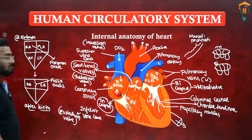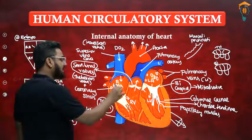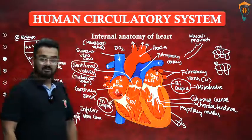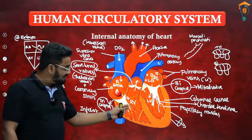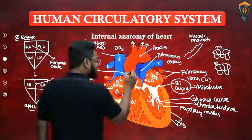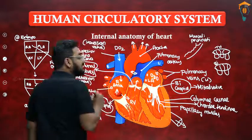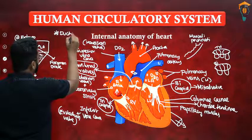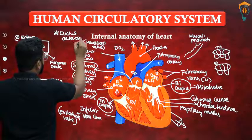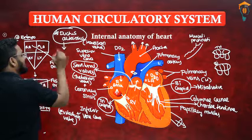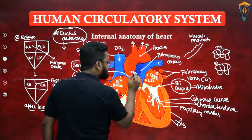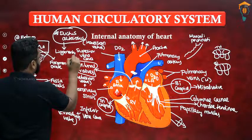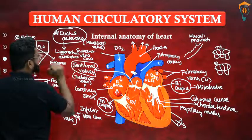In embryos, to further prevent deoxygenated blood from reaching the lungs (since lungs are non-functional), blood jumps from the right atrium to the left atrium. Additionally, between the pulmonary artery and aorta there is a connecting duct called the ductus arteriosus. After birth, this ductus arteriosus closes and remains only as a non-functional ligament called the ligamentum arteriosum.